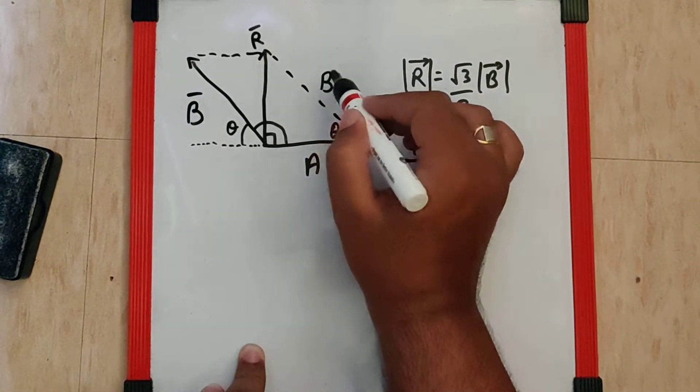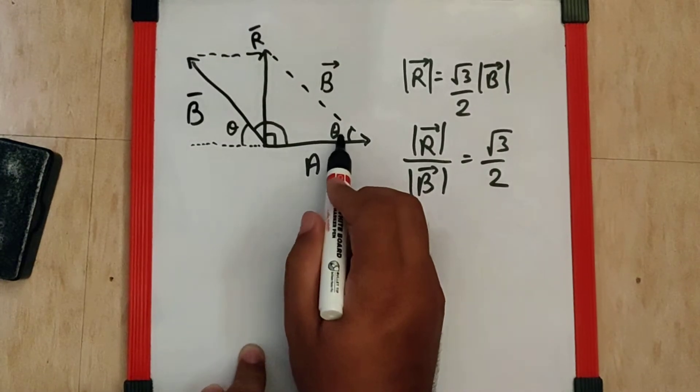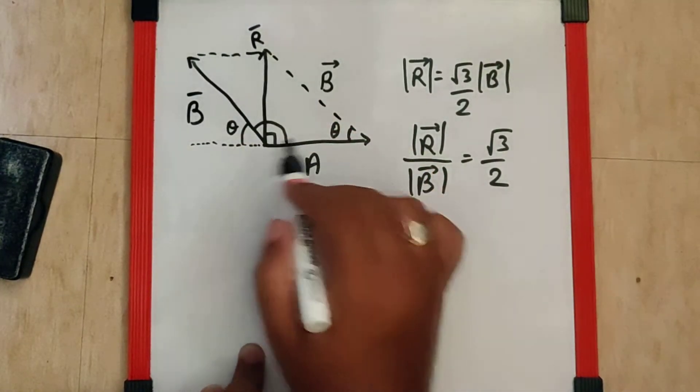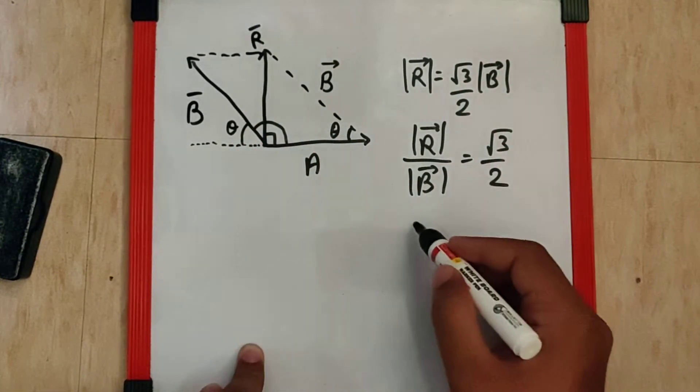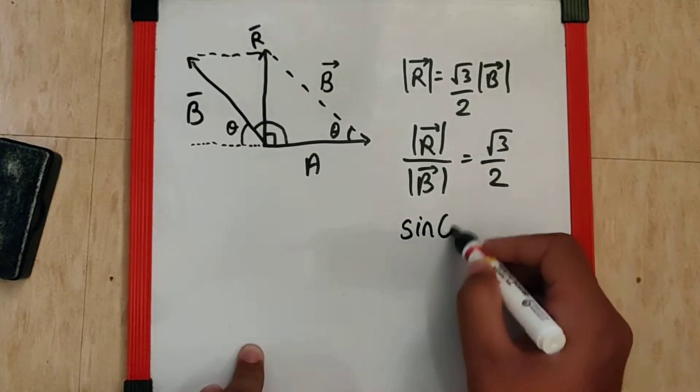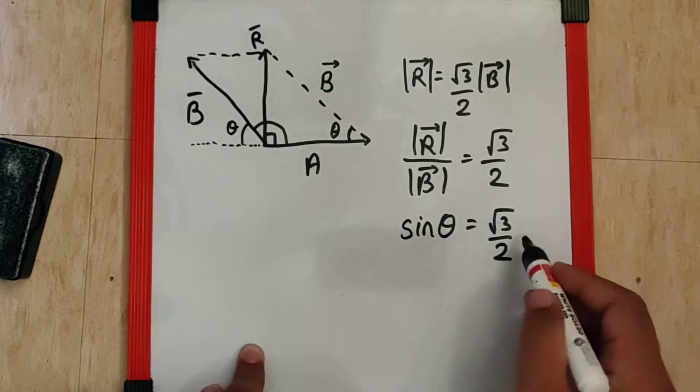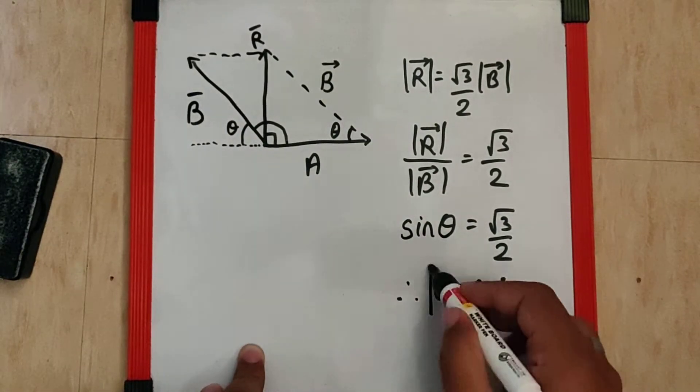If you concentrate on this triangle, sine theta is opposite over hypotenuse, where opposite is R and hypotenuse is B, which means sine theta equals √3/2. Since sine 60 is √3/2, therefore theta is 60 degrees.